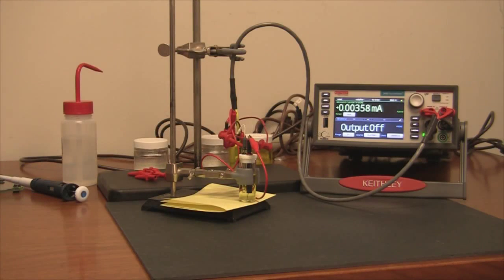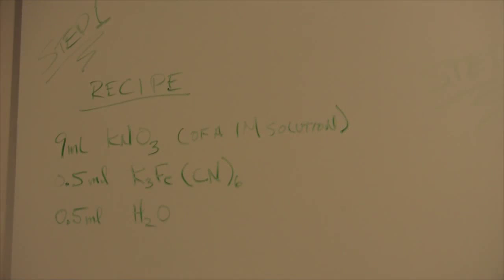Hi, in this video I'd like to show you just how easy it is to run a cyclic voltammogram with the model 2450-EC. Today we're going to run a cyclic voltammogram on potassium ferrocyanide using potassium nitrate as a supporting electrolyte.